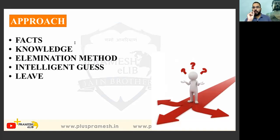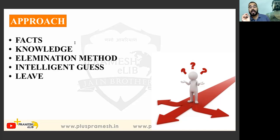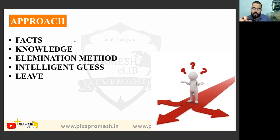Next, what approaches are we supposed to take in order to attempt this paper? Number one, we must be aware of facts — many questions are fact-based. We need conceptual clarity. The elimination technique is used when we are stuck on any option — eliminate wrong options. Intelligent guesses are to be used, and for questions we are not aware of at all, we should leave those questions.